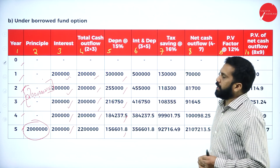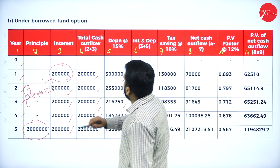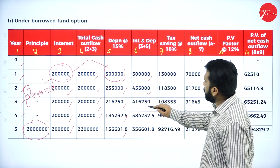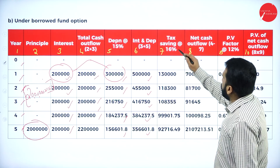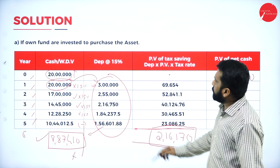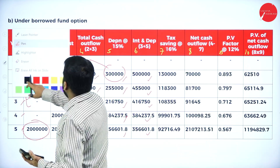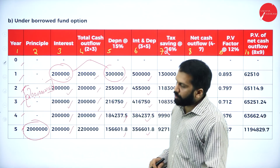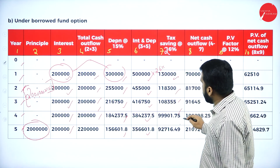Your interest as well as depreciation — add both. If you add both, your answer is 5 lakh, 4 lakh 55, 4 lakh 16, 3 lakh 84, 3 lakh 56. These are your totals. Then tax saving at 26% — on this value, you calculate 26%, you will get this answer. Whatever the numbers you have, multiply with your tax 26%. Every question paper the percentage will change — that time it was 26, now the percentage is 31.2%. In the question paper, they will mention what the percentage is.